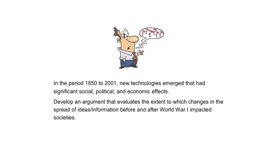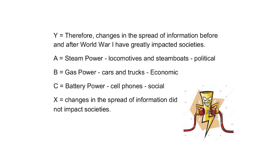Here's an adult AP-level question: 'In the period 1850 to 2001, new technologies emerged that had significant social, political, and economic effects. Develop an argument that evaluates the extent to which changes in the spread of ideas and information before and after World War I impacted societies.' That's the kind of question you'll get in college. I break it down easily. My argument — the 'therefore Y' — is: 'Changes in the spread of information before and after World War I have greatly impacted societies.' The counterpoint — my X — is: 'Changes in the spread of information did not impact societies.'